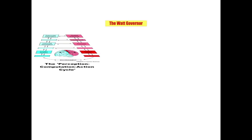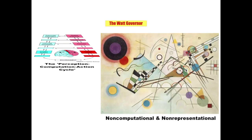What Van Gelder calls sequentiality and cyclic operation. And four, the susceptibility to stepwise information processing decomposition — what Van Gelder calls homuncularity. The watt governor, Van Gelder claims, is a non-computational, non-representational control system.